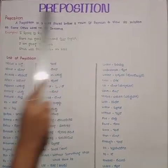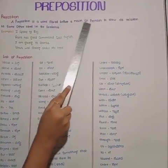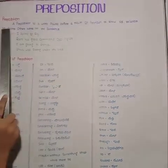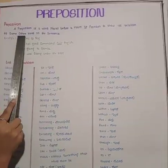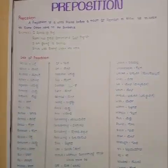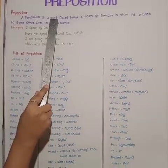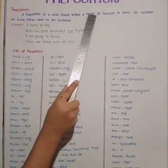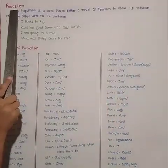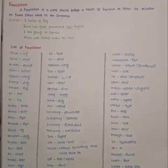Preposition means a preposition is a word placed before a noun or pronoun to show its relation to some other word in the sentence. It means preposition is a word placed before a noun and pronoun, and its relation is called preposition.